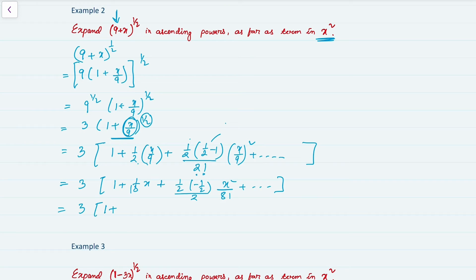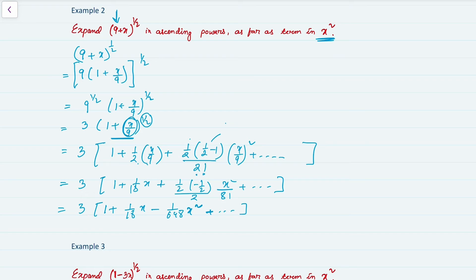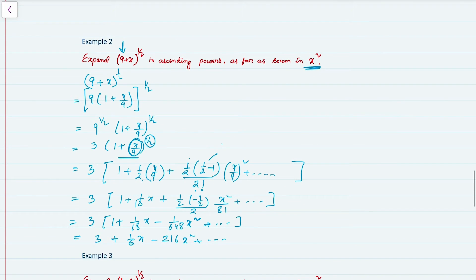This simplifies to 3[1 + (1/18)x − (1/648)x²] + ... Then multiply 3 through each term: the final answer is 3 + (1/6)x − (1/216)x². That's example number 2.